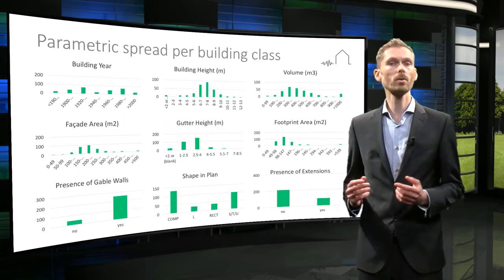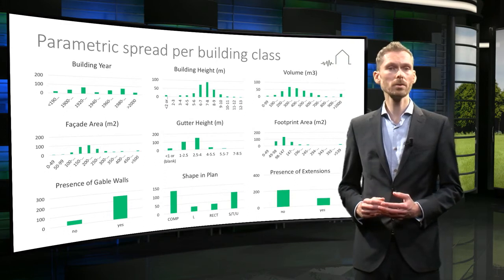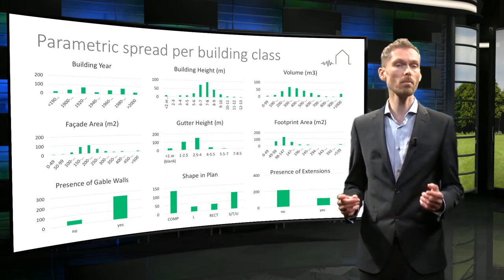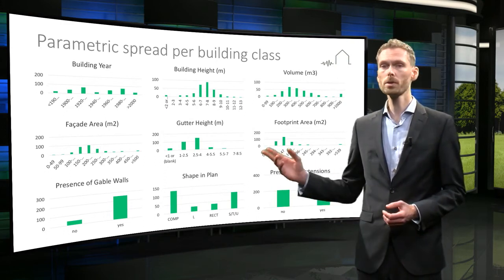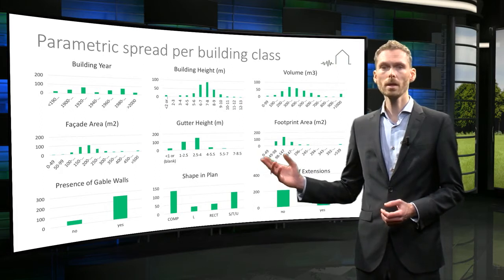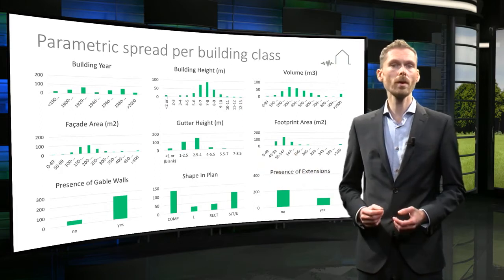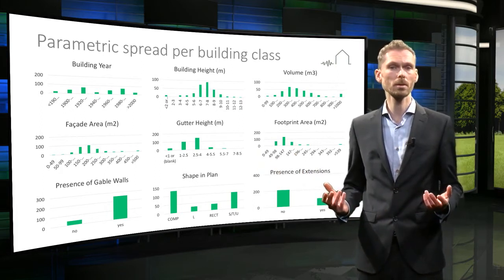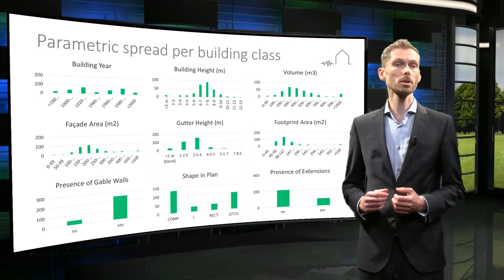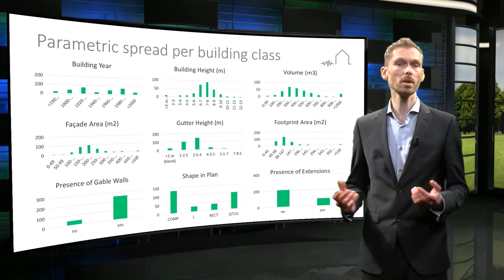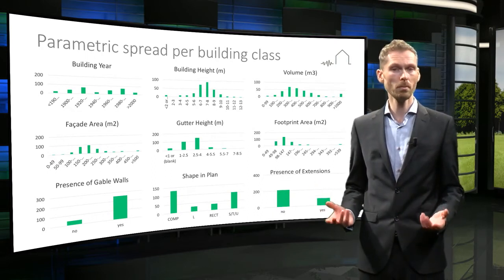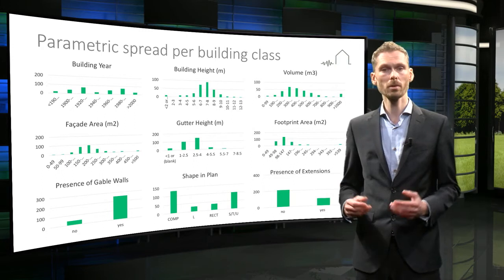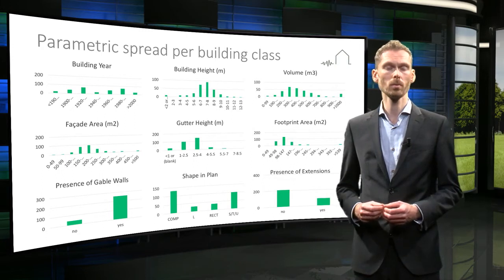To better understand the typologies, let's examine the variability within each typology. This can be done by looking at the individual parameters within the building group in more detail. The overview shown here is an example of the variation observed when looking at several of these building parameters. The resulting charts can be used to identify the mean value as well as the spread for a certain parameter within the building group.